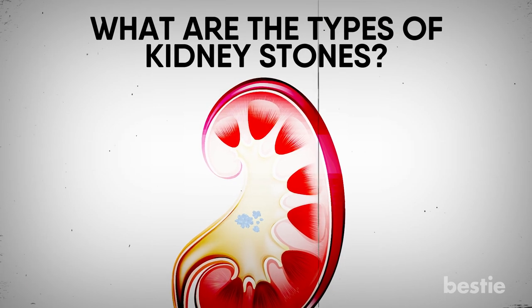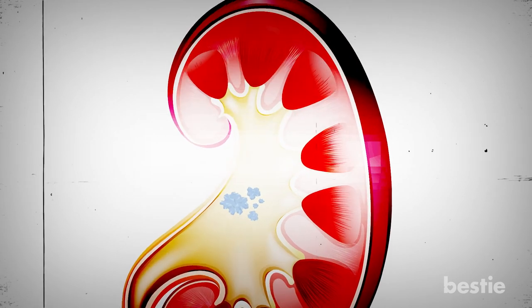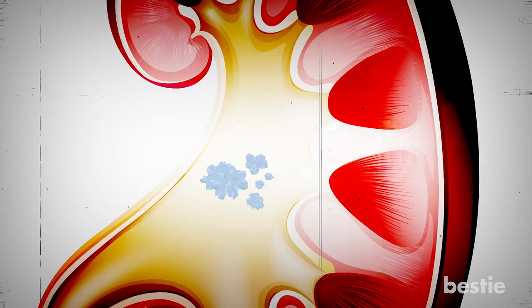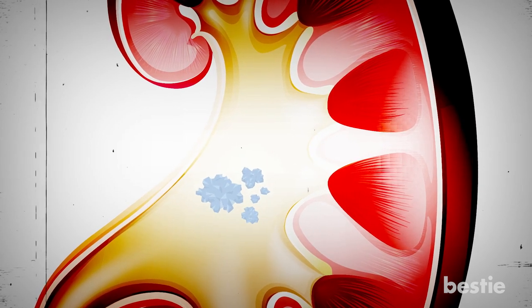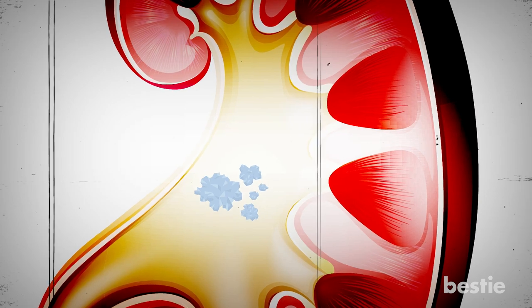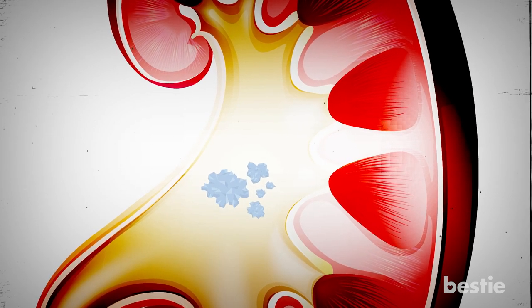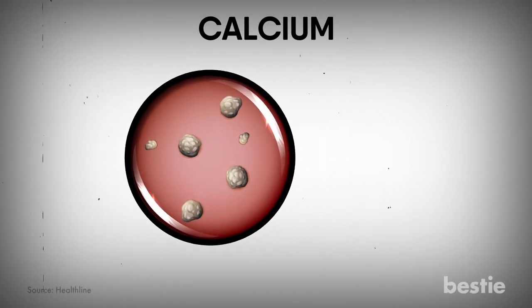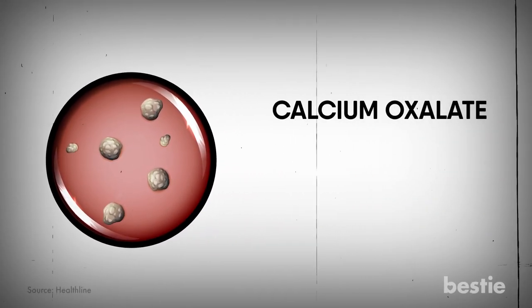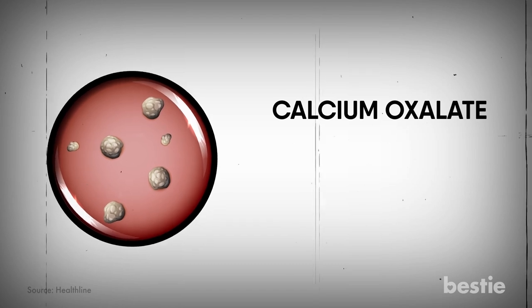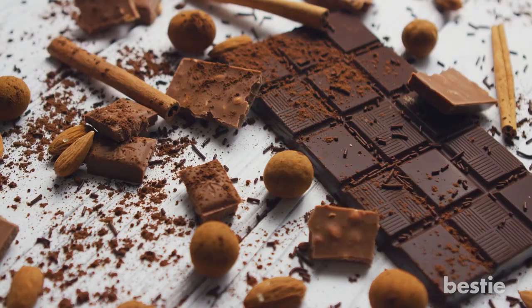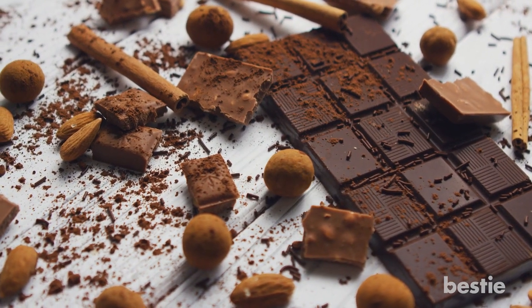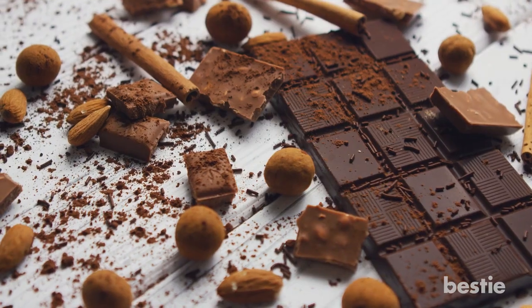What are the types of kidney stones? Don't imagine all kidney stones as crystal blue ones coming out from your body. Kidney stones can vary on the basis of their composition and are classified under certain types. Different types of stones contain different components, such as calcium. Calcium kidney stones often contain calcium oxalate. They can also be made up of calcium phosphate or maleate. Foods such as your favourite fries and chocolate contain high amounts of oxalate.